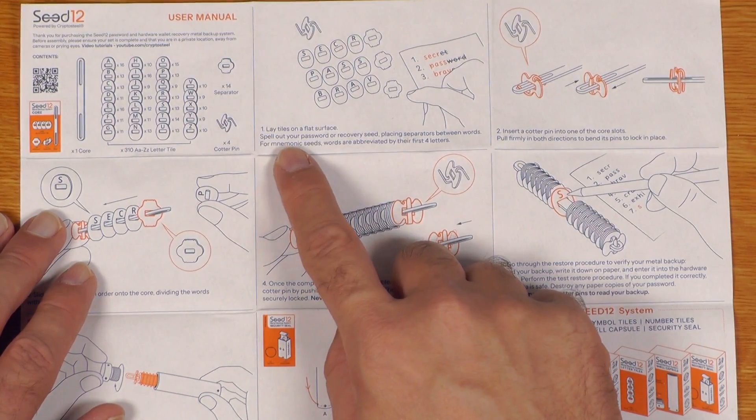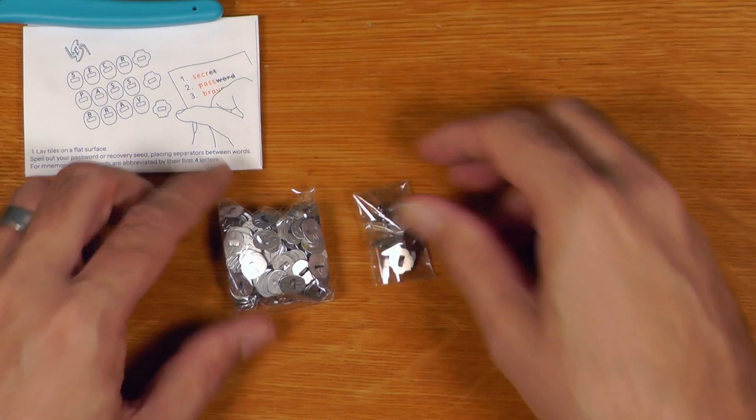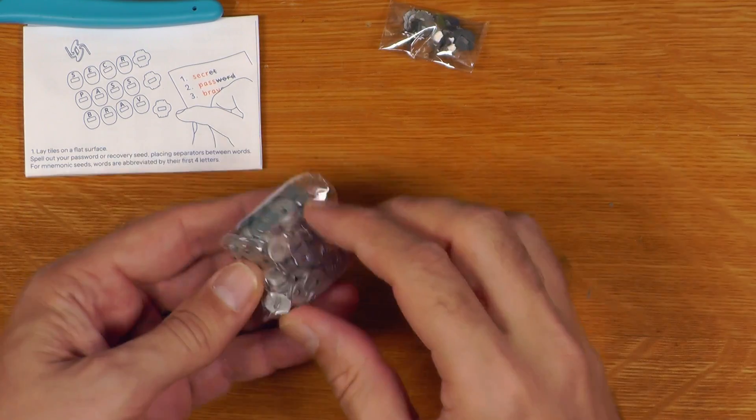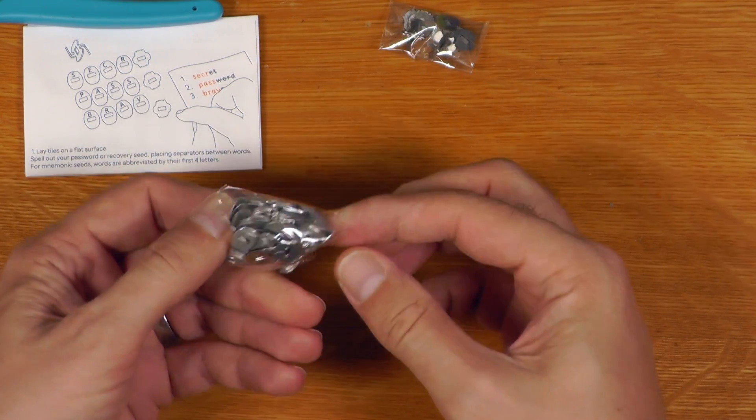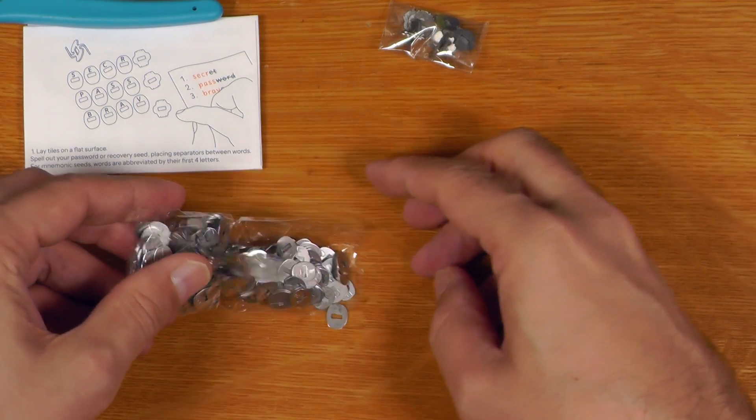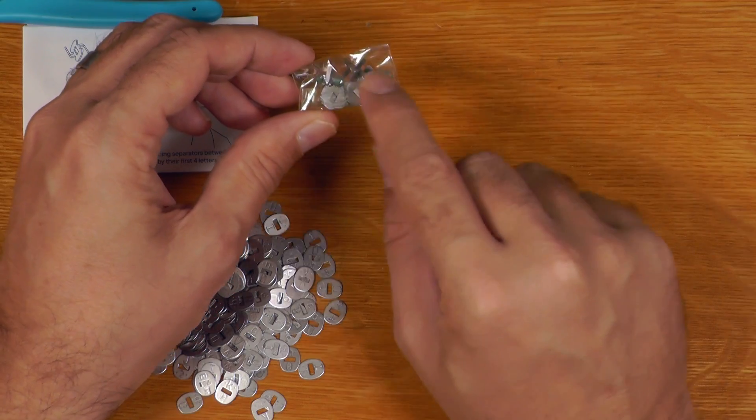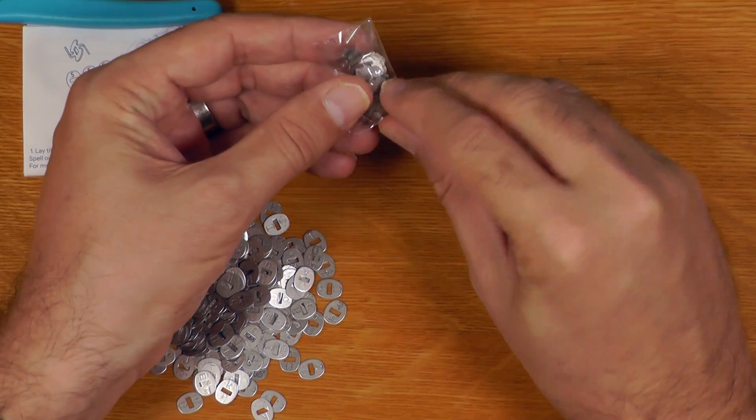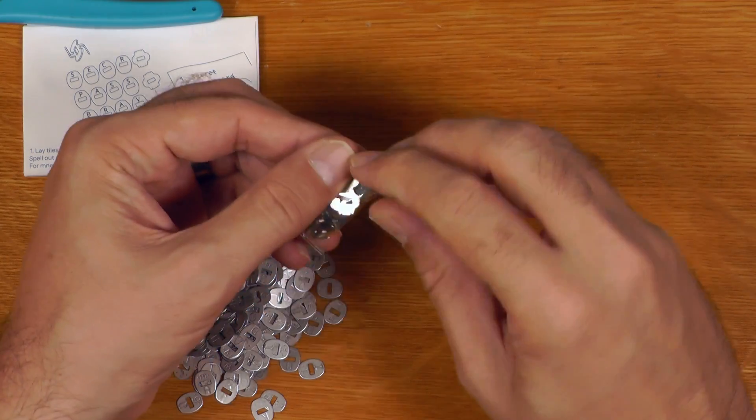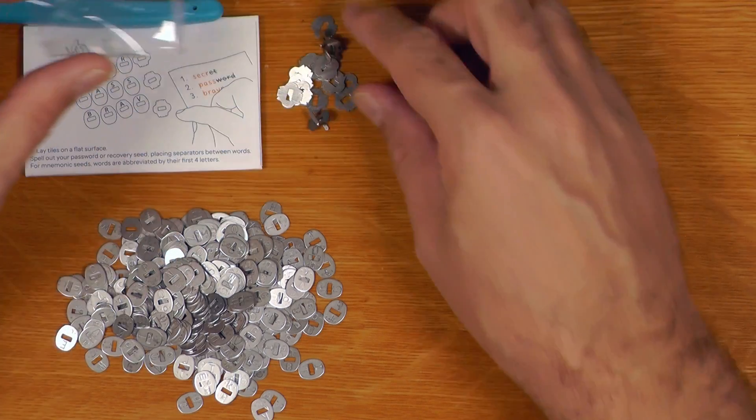So, step one, we'll just lay out the tiles and set out our recovery phrase, getting ready to put it on the core. For that, we're going to use this and this. Firstly, these are all of our letter tiles. We'll just peel that open, just tip them out all over the bench. And this was also the separators and the clasps, so we'll need them too.